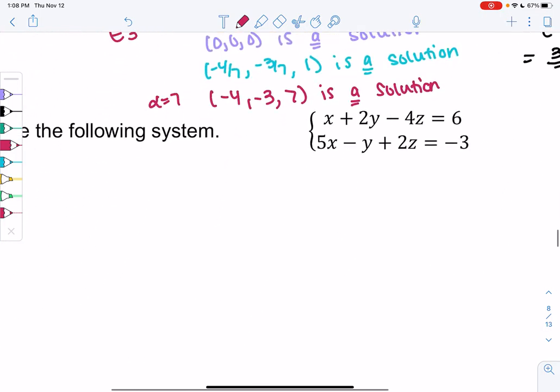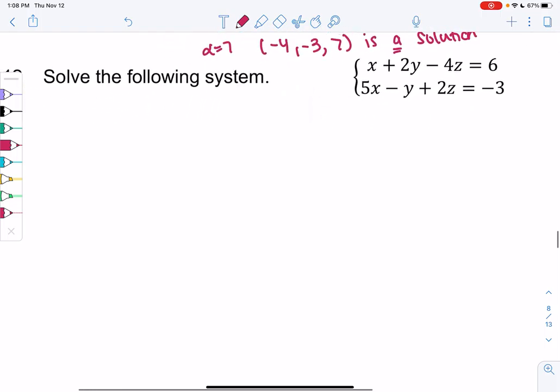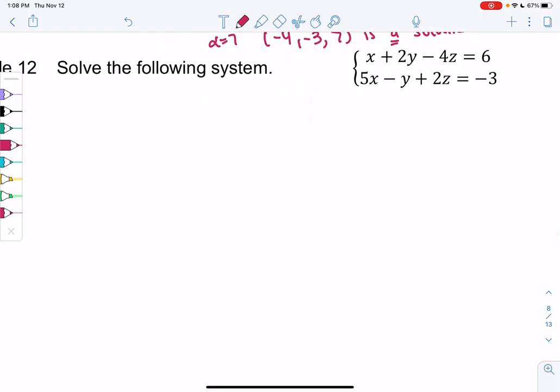This is a way of indicating all possible solutions. Let's try one more. Example 12. Solve the following system. It's tricky because there's only two equations. We have x plus 2y minus 4z equals 6 and 5x minus y plus 2z equals 3. Since I don't have three equations, I'm just going to try regular elimination because I can't make a triangle.